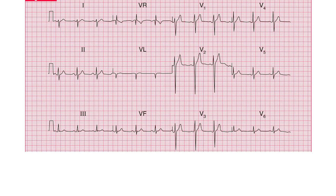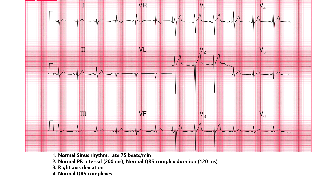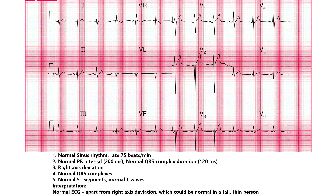Here is another variant of a normal ECG. It will be reported as: normal sinus rhythm, rate 75 beats per minute, normal PR interval, normal QRS complex duration, right axis deviation because lead 1 is negative, normal QRS complexes, normal ST segments, normal T waves. Interpretation: Normal ECG, apart from right axis deviation, which could be normal in a tall thin person.